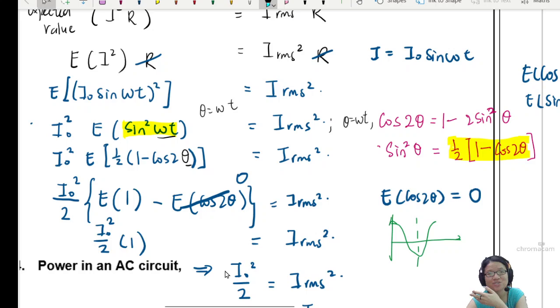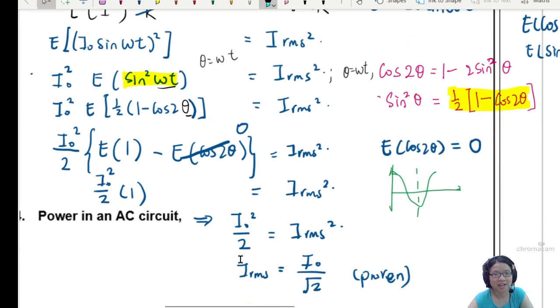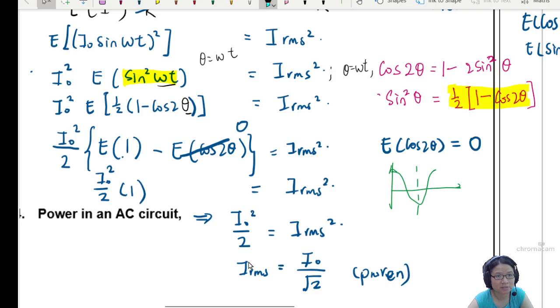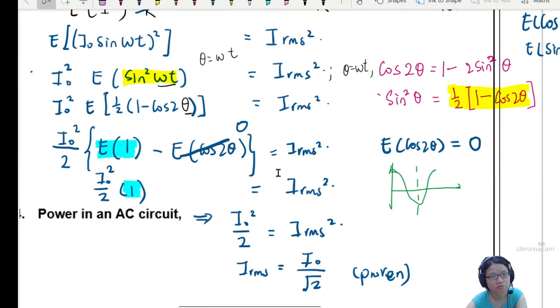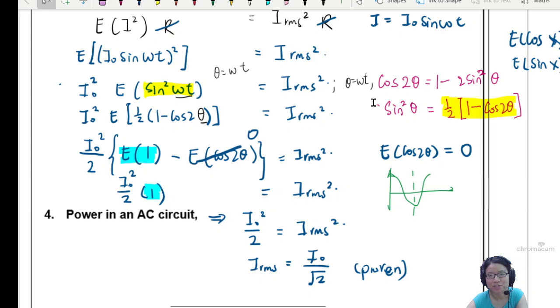Expected value of 1 is 1. Right? Isn't that true? The expected value of 1 is 1. So because of that, this expected value of 1 is equal to 1. So then after that, it's just a matter of rearranging to get root mean square current is I0 over root 2. So this is a proof, a variation of the proof using trig without using integration.